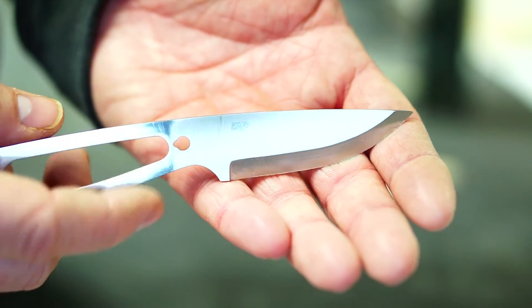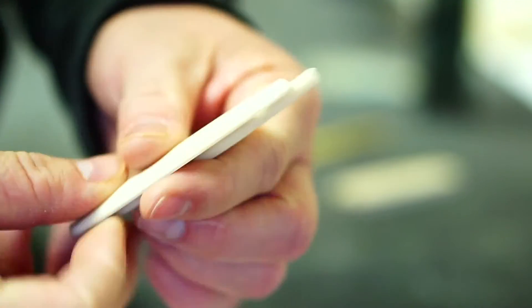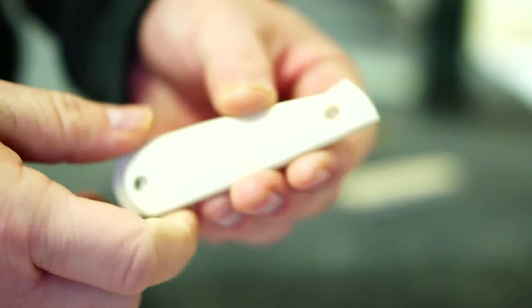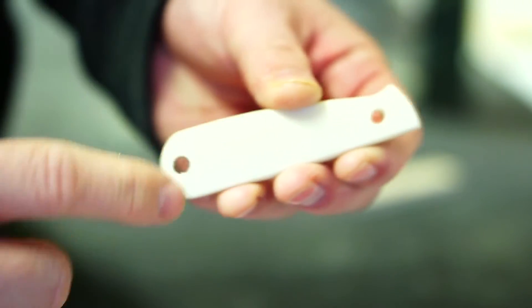I picked this up as a kit with scales from DLT trading. Here are the scales right here, but I'm not going to be using the scales that it came with, nor the Corby bolt, nor the lanyard holes.